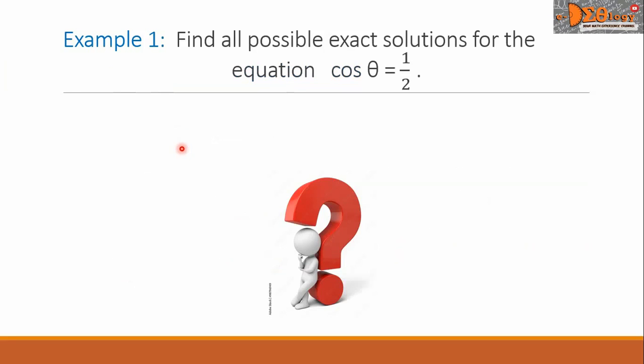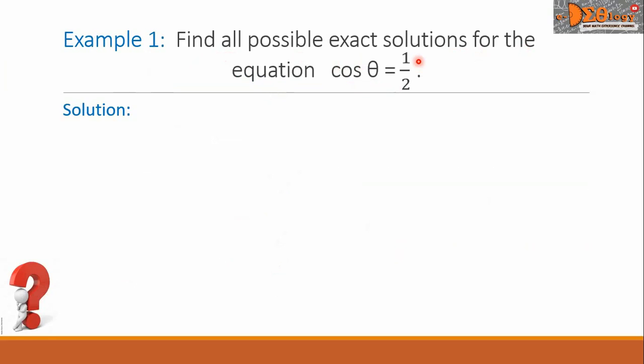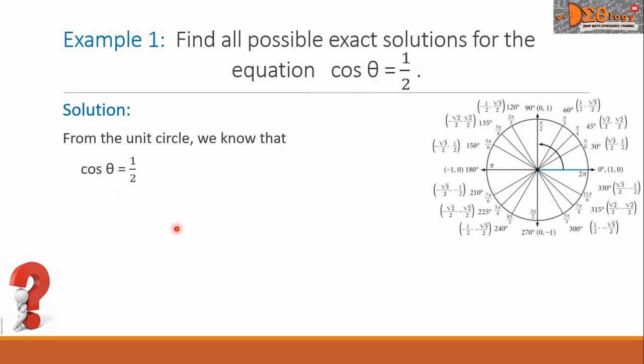Let's see this example 1. Find all possible exact solutions for the equation cos θ = 1/2. From the unit circle, we know that cos θ = 1/2. The θ here equals π/3 and 5π/3. We have two possible answers. These are the solutions in the interval from 0 up to 2π.